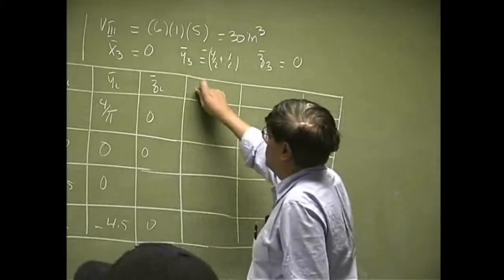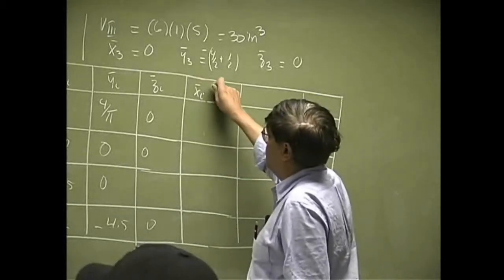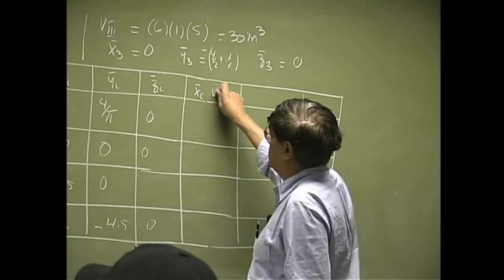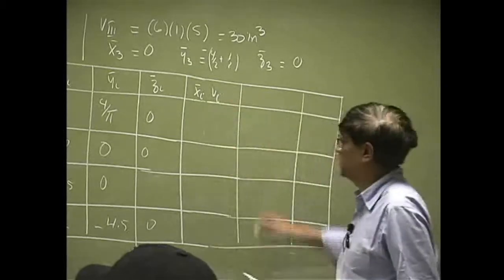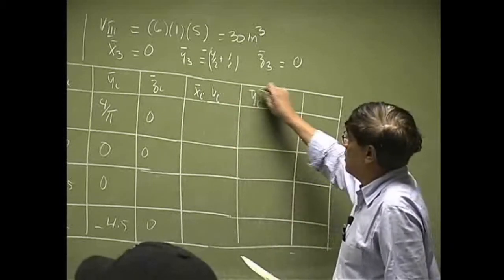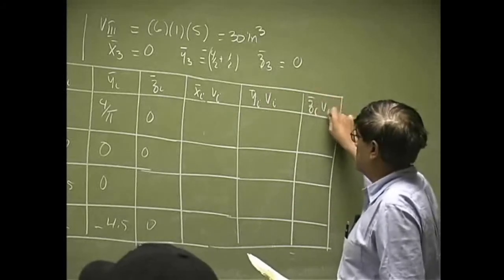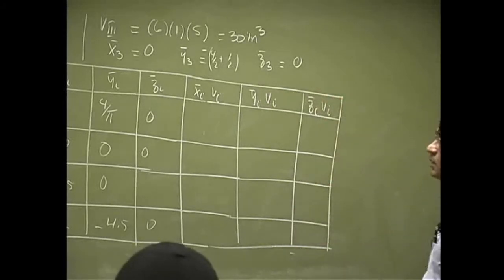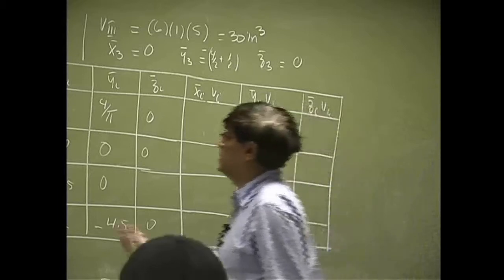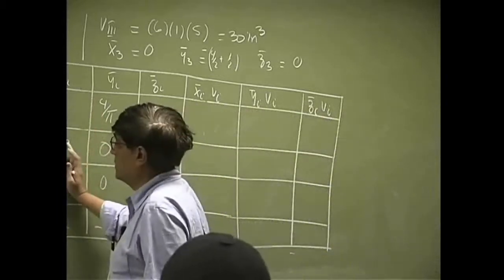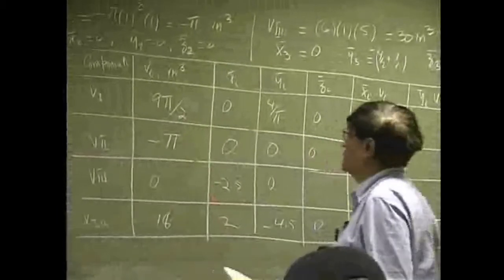The first column is Xi bar times Vi, then you have the second column Yi bar times Vi, then you have the third column Zi bar times Vi. We're going to multiply every term in this column to determine this column.